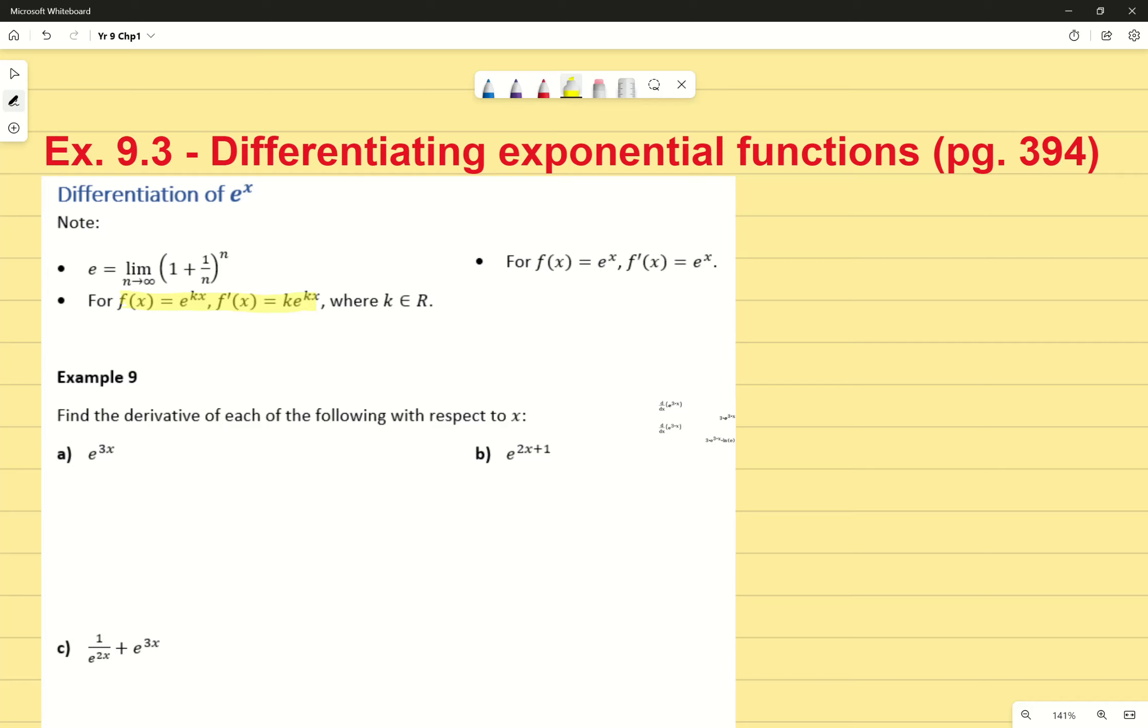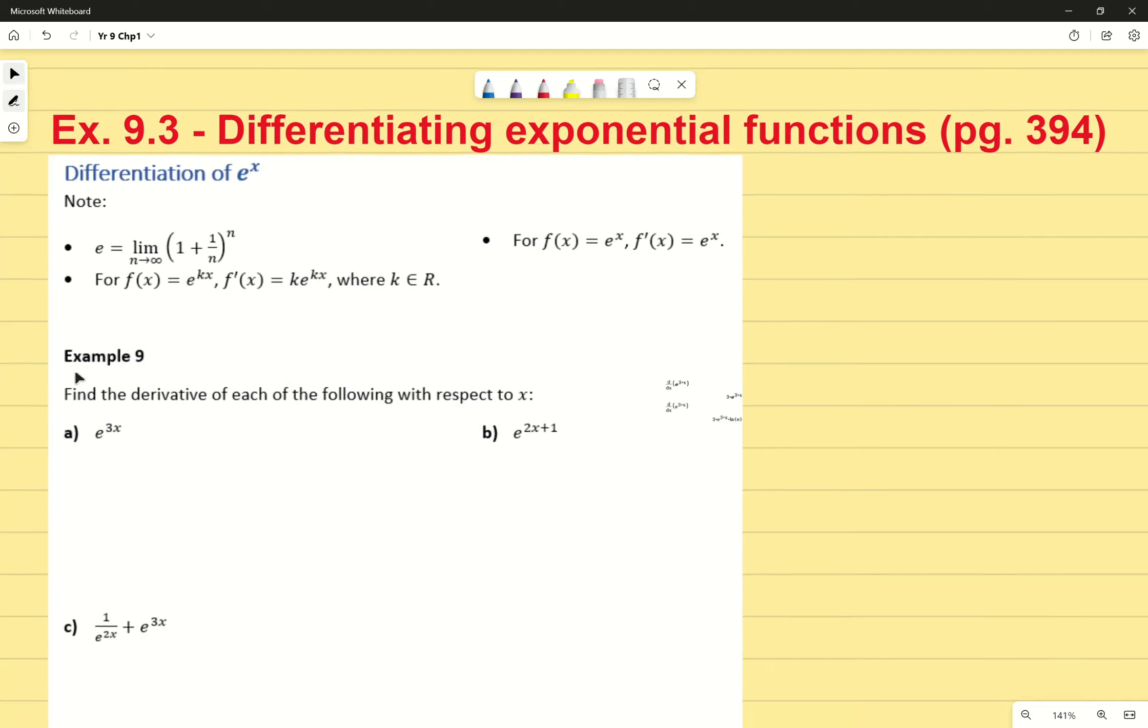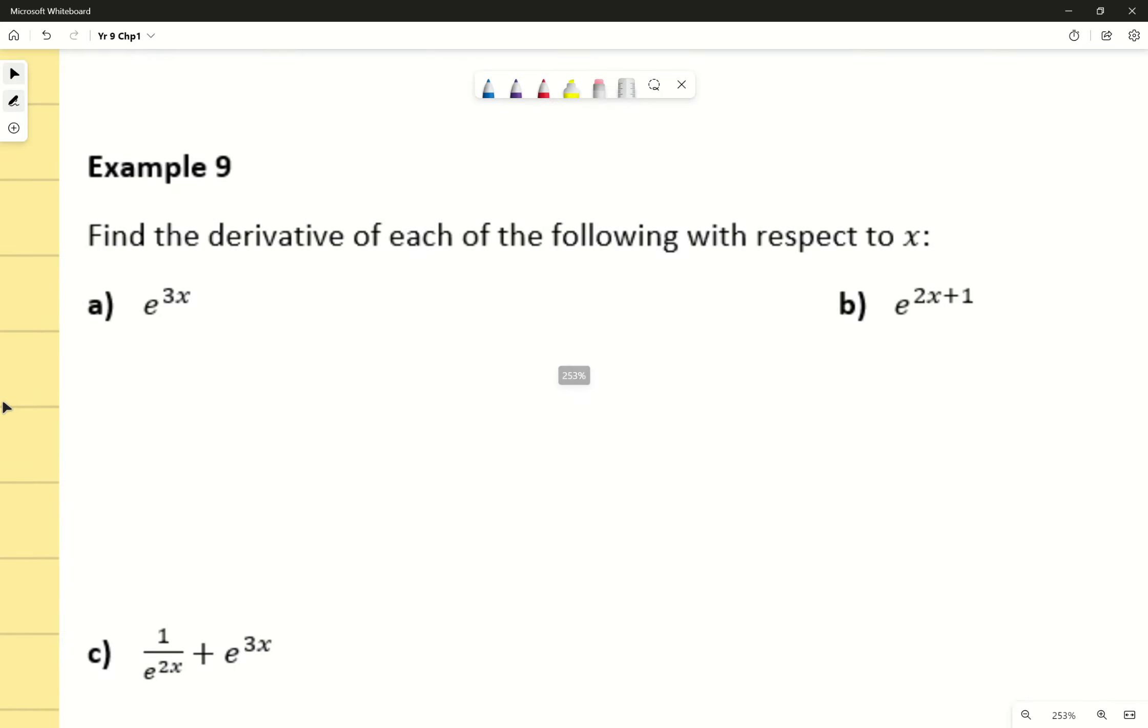Do note that the original e to the power of kx remains the same. If you're curious, all this number comes from this notion right here, where e equals the limit as n approaches infinity of 1 plus 1 over n all to the power of n. Please note that that is not an assessable aspect of our assessments. Let's look at some examples.